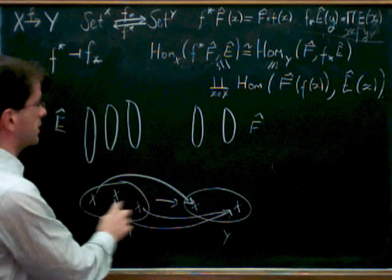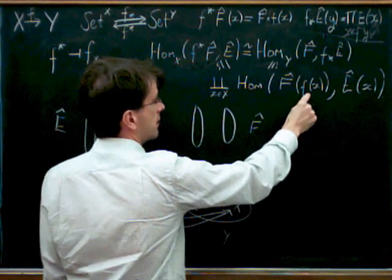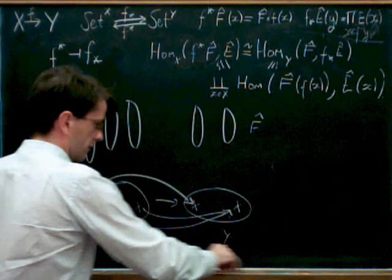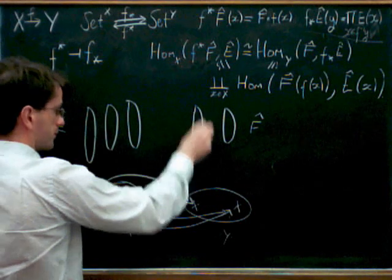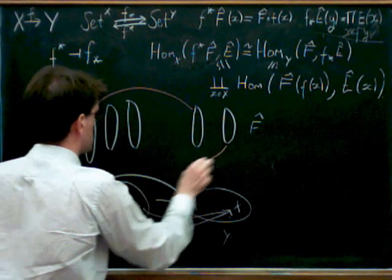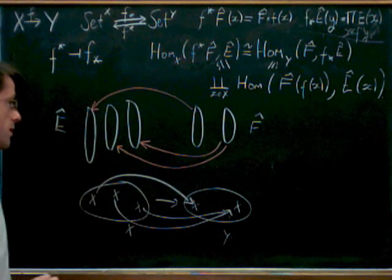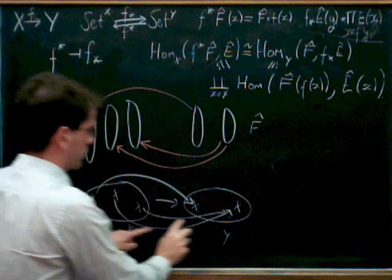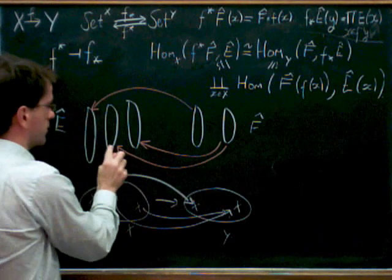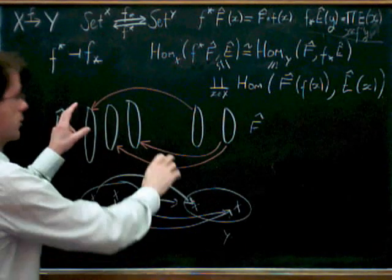So what we have for each point in X, we have a morphism from the fiber over the image of X to the fiber over X. So hopefully I can find a nice visible color here. So for each X we've got a morphism coming from the fiber over X image. So these two points go to the same image in Y, so we get two maps from that one to each of the fibers. So that's what the terms in this adjunction are.